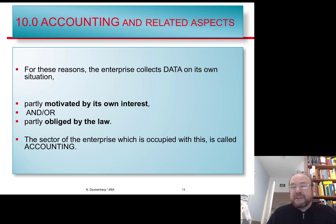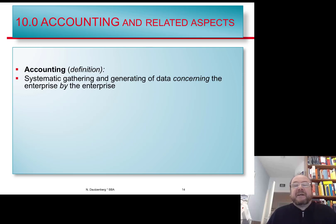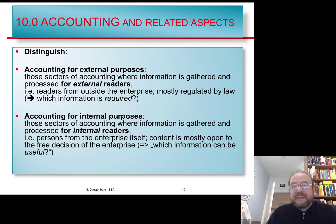The enterprise must establish ways to collect data on its own situation, partly motivated by its own interest, partly by legal requirements, and it's also possible that you agreed to gather and pass on information voluntarily through a contractual agreement — for example, in order to get a credit you may have to deliver information on the enterprise's situation. The department busy with that is generally called the accounting department. Accounting can be defined as the systematic gathering and generating of data concerning the enterprise — done systematically, not just by chance.